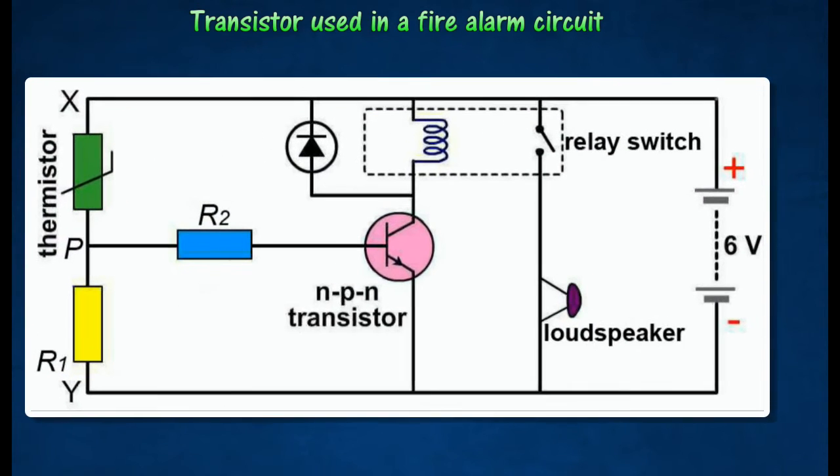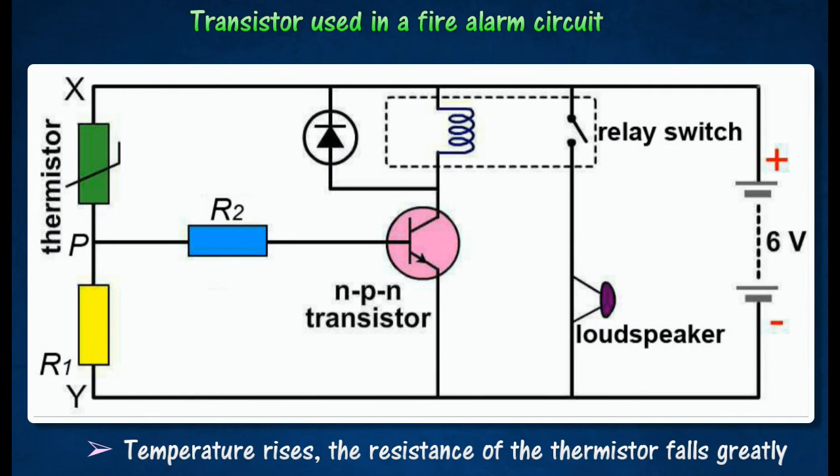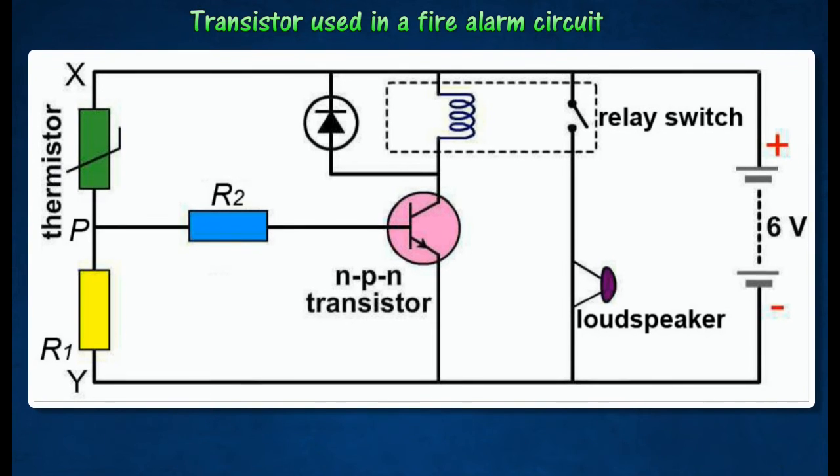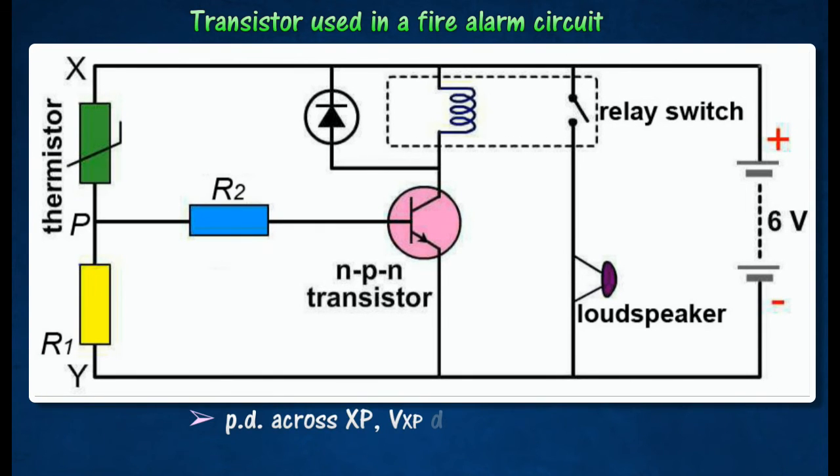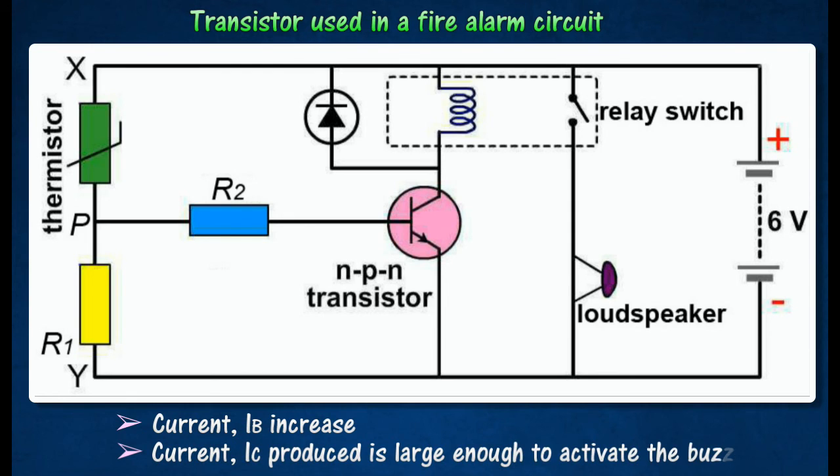When there is a fire, the resistance of the thermistor decreases with a rise in temperature. The potential difference across XP decreases but the potential difference across PY increases. This causes the base current IB to increase so that the collector current IC produced is large enough to activate the buzzer or the loudspeaker.